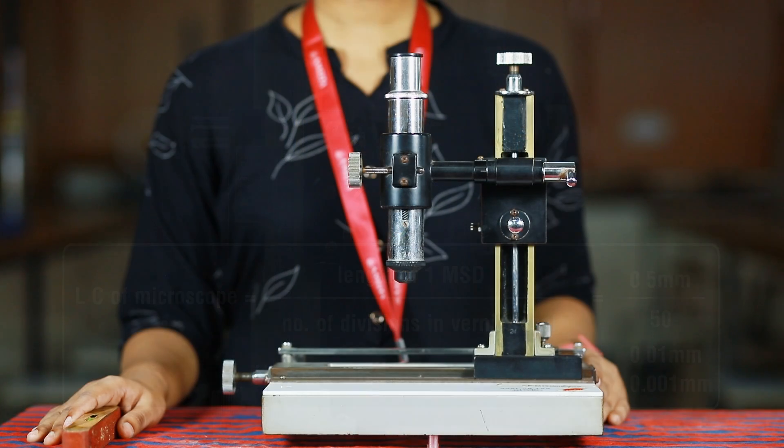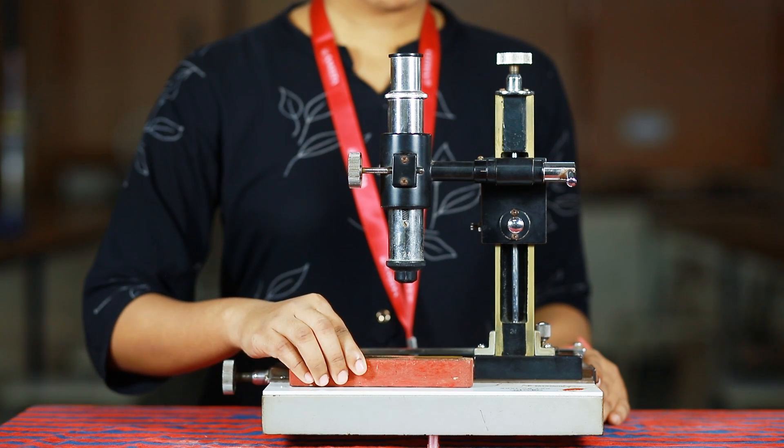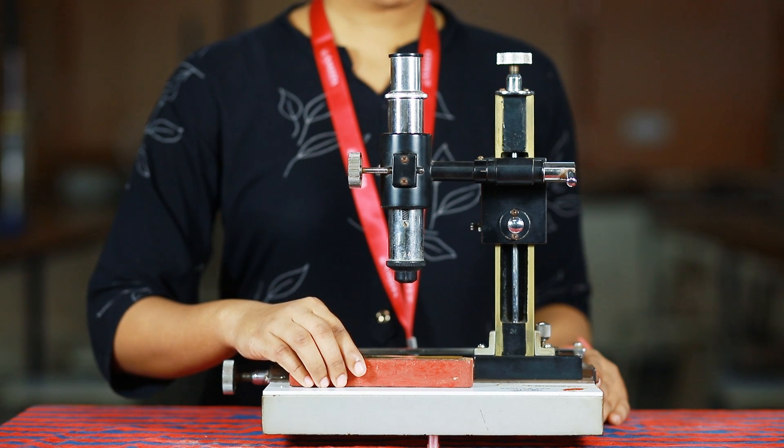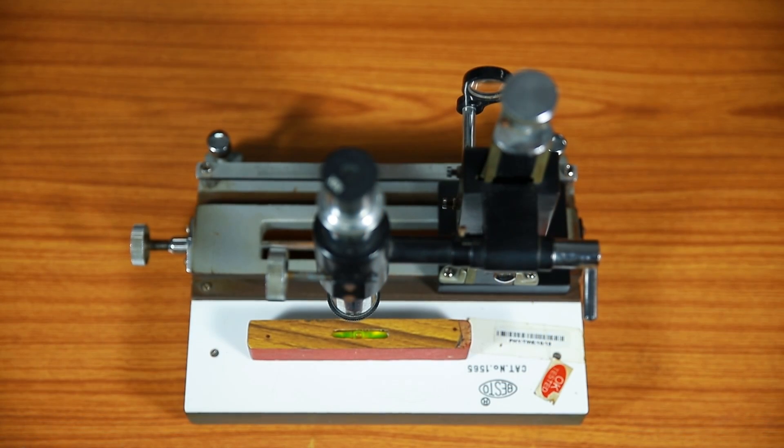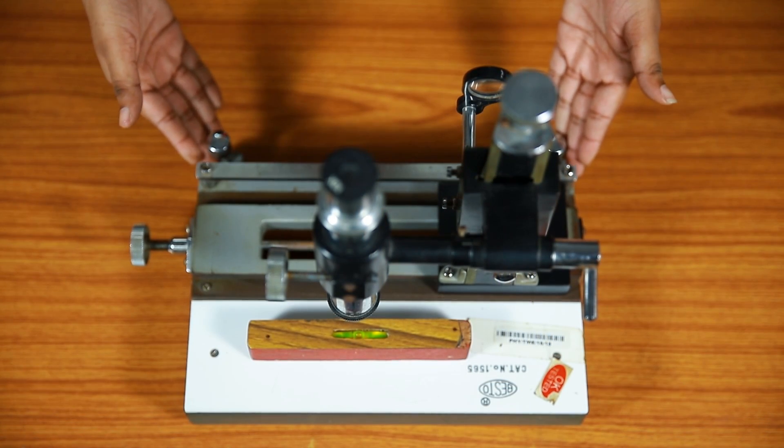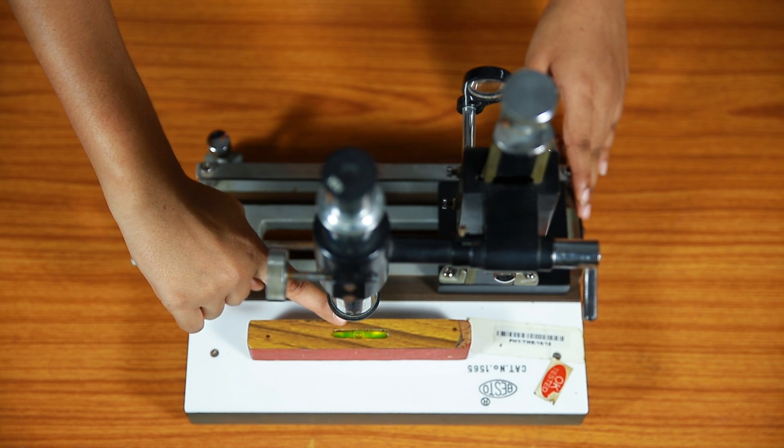Place the travelling microscope on the table. Now, place a spirit level on the horizontal surface of the travelling microscope. Adjust the levelling screws, if required, to make base of the microscope horizontal so that the bubble in spirit level comes exactly in the centre.